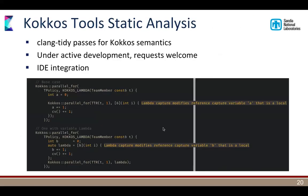Here's an example for the static analysis tool. In Kokkos, you're not allowed to capture by reference and then modify a variable from the outer scope within a nested kernel. The Clang Tidy plugin is able to catch this — it tells you 'lambda captures and modifies by reference' — for things which would technically compile but violate Kokkos semantics.